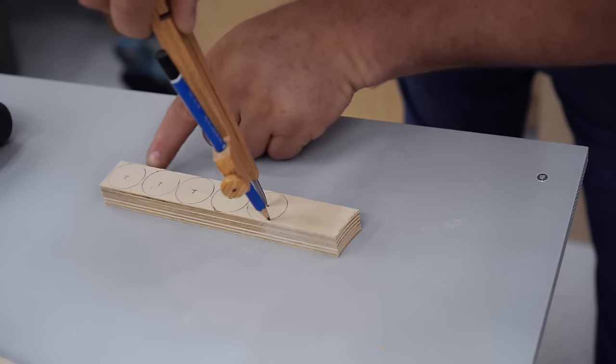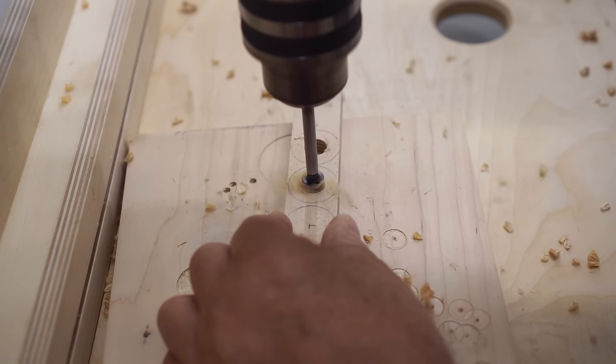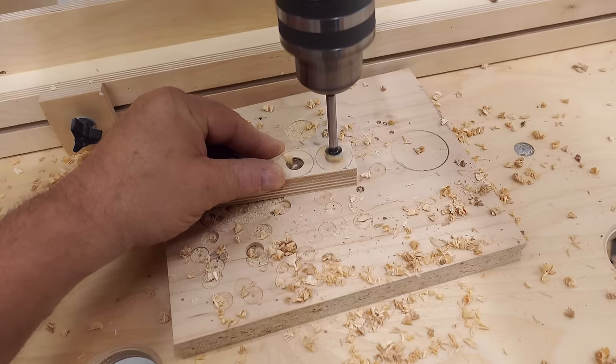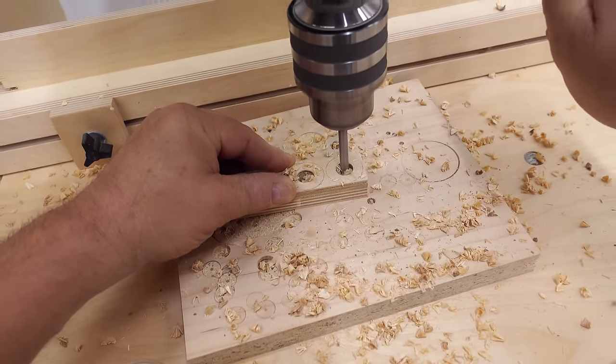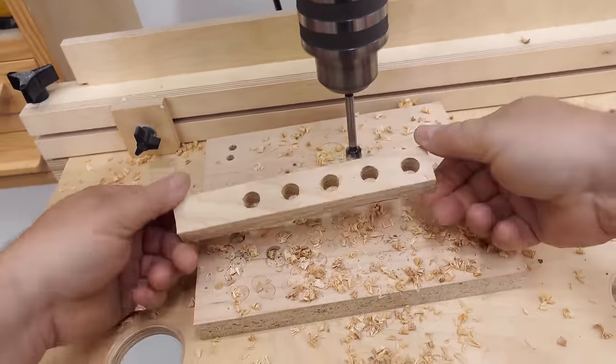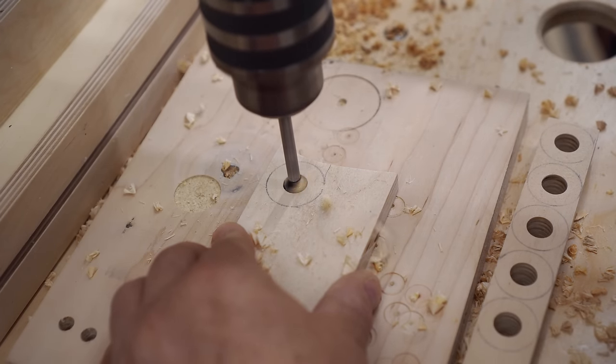So the first thing I need to do is cut out the discs, and I'm using three-quarter inch plywood for that. Then I'll lay out the center point for each disc. I need five, and then the last thing I need to do before I cut these out is drill the center hole. It's a lot easier to do when the piece is bigger like this rather than trying to hold something small.